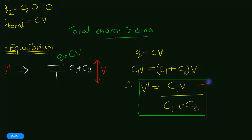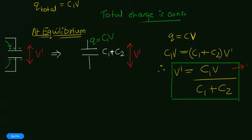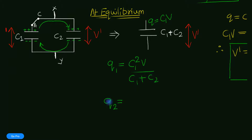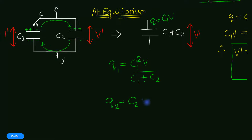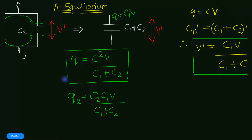So V dash is the voltage V1 and V2 — the voltage across each capacitor. Now that we know the voltage, we can calculate what the charge on each capacitor is. The charge on capacitor C1 is just C1 times the voltage, so that's C1 squared times V divided by C1 plus C2. The charge on capacitor C2 is Q2 equals C2 times the voltage, which is C2 times C1·V divided by C1 plus C2. And there are our answers.